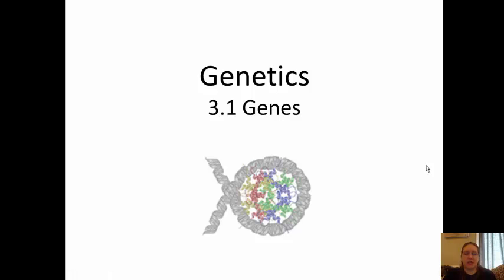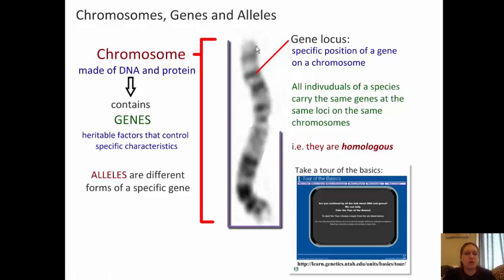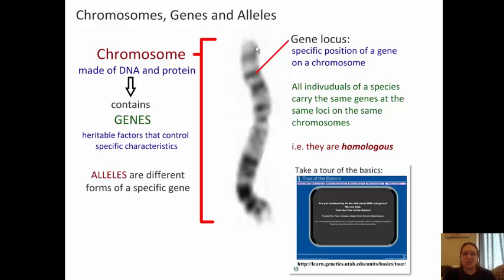Today's notes are in our genetics chapter 3, section 1, which covers genes. First, we need to go over some vocabulary. This image here in the middle is a chromosome. Remember that eukaryotic chromosomes are made of DNA and protein, while prokaryotic chromosomes have no protein associated with them — they are considered naked. All chromosomes contain genes, which are the heritable factors that control specific characteristics of the organism. Alleles are different forms of a specific gene on a chromosome.